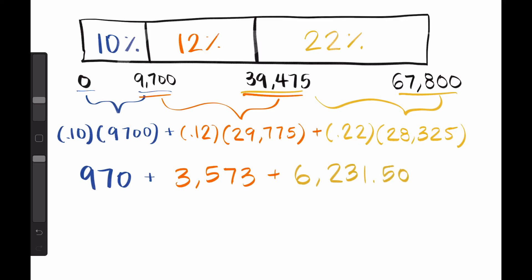Adding these three values that represent the taxes for each bracket, our final answer is $10,774.50, which is Mario's total tax due.